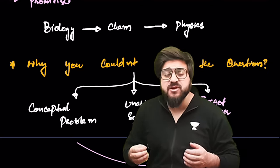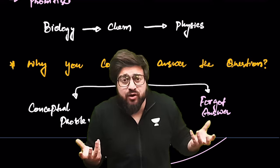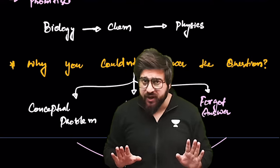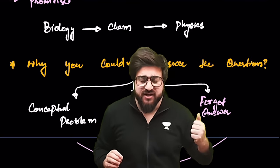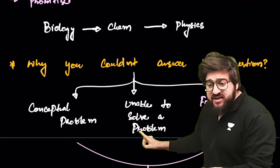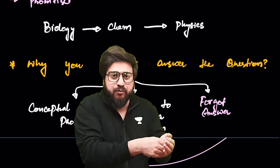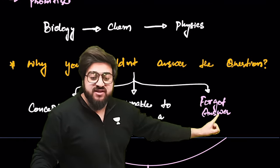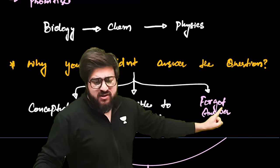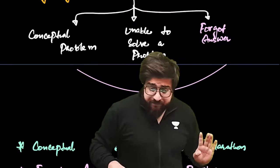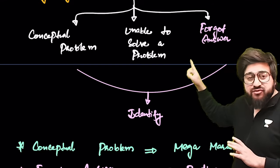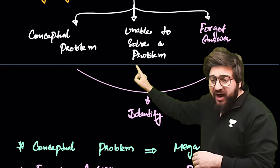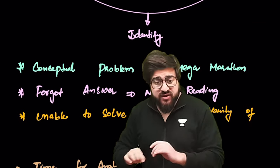Next: why couldn't you answer a question? If you lagged in the exam, there can be three reasons. First is a conceptual problem — you don't have conceptual clarity or haven't studied that topic well. Second is being unable to solve the problem — you have read the concept but still couldn't solve that particular problem. Third is forgetting the answer — this happens mostly in biology.